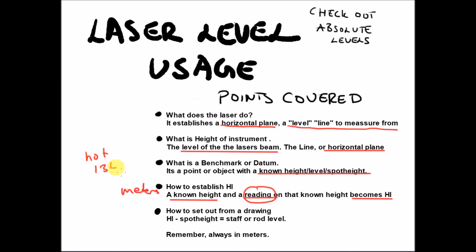If you want to set something out from the drawing, you take height of instrument minus the drawing level or the spot height, and this will become the rod level. And once again, always in meters. You will make mistakes, but this is the most common one. Thanks for watching.